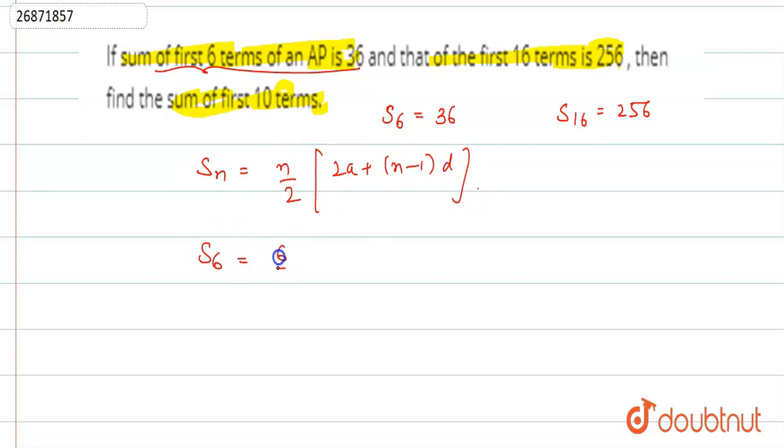So, if we take the sum of S6, that means 6 by 2, 2a plus 6 minus 1 times d. That means 3 times 2a plus 5d. This implies 6a plus 15d.